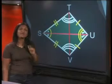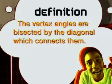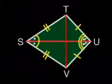Now how can we state this in mathematical language? We can say that the vertex angles are bisected by the diagonal which connects them, which is SU in this case.